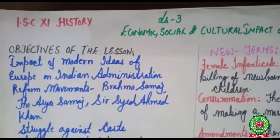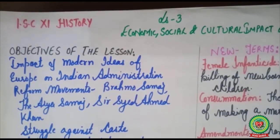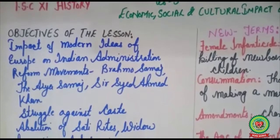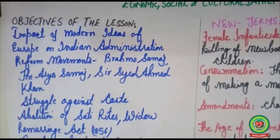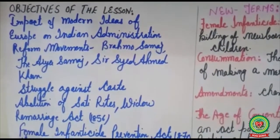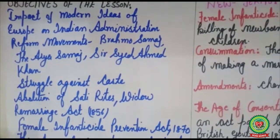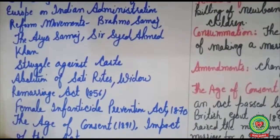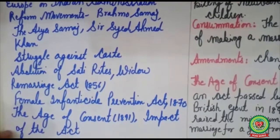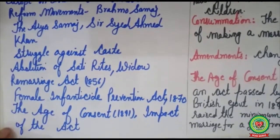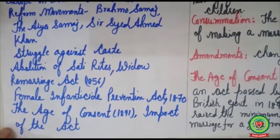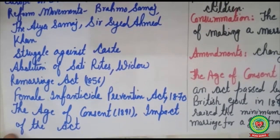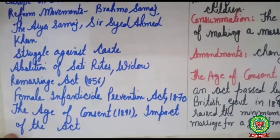Before going through the lesson, we will understand the objectives. The objectives are: impact of modern ideas of Europe on Indian administration, reform movements, Brahmo Samaj, Arya Samaj, Sarsayya Dehmat Khan, struggle against caste, abolition of sati rights, Widow Remarriage Act 1856, Female Infanticide Prevention Act 1870, the Age of Consent 1891, and the impact of the Age of Consent Bill 1891.